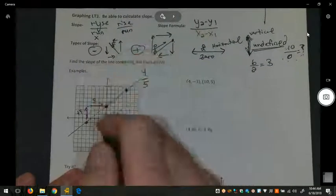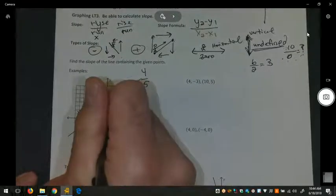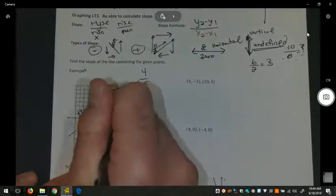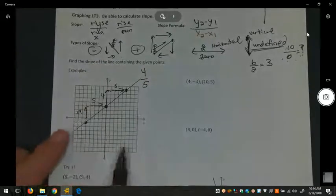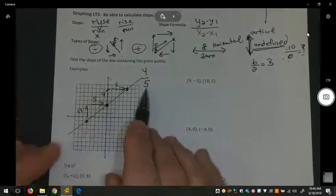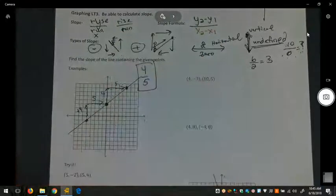Let's see if that's consistent between the next two points. Up one, two, three, four, and right one, two, three, four, five. So it is consistent. A rise of four, a run of five. Going from left to right, it's up, so it's positive four fifths.